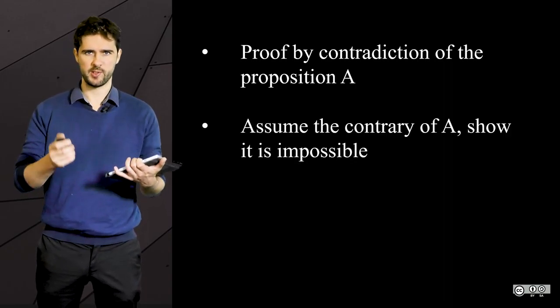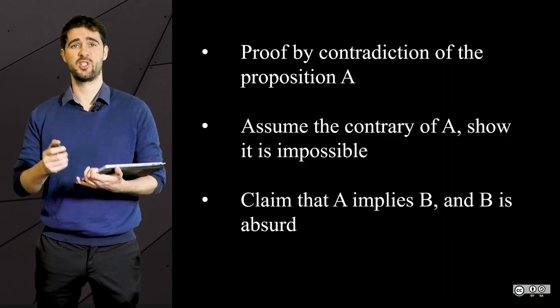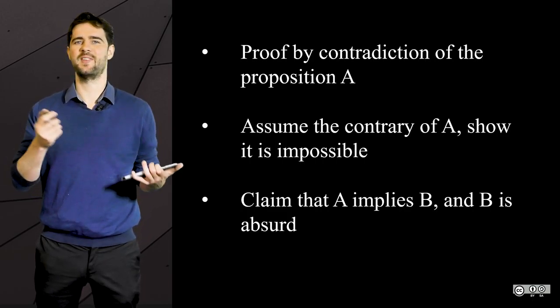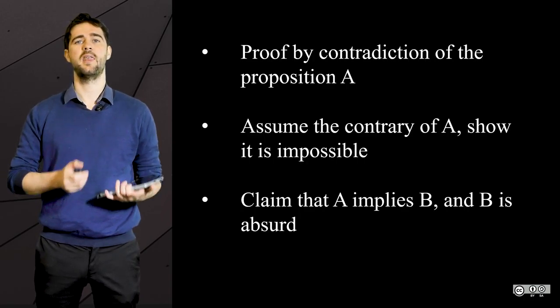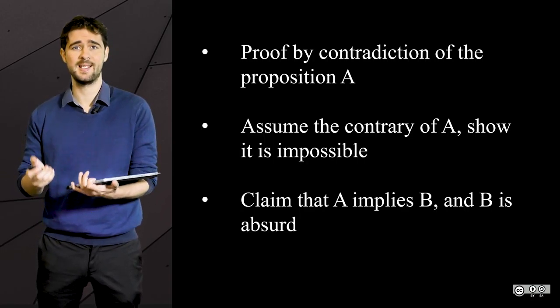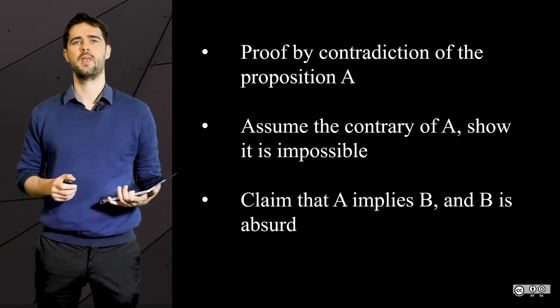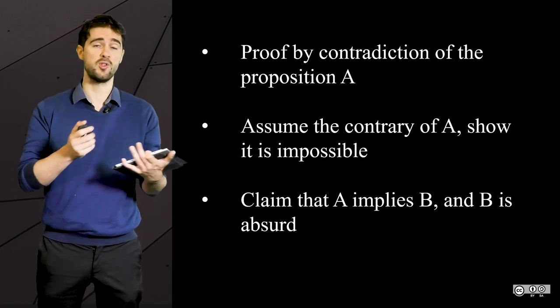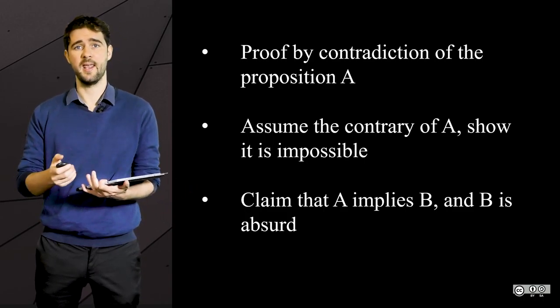Or you show that proposition A implies proposition B necessarily, notably if it is a suppressed or a hidden premise. And then you show that B is impossible or absurd. And since a true proposition cannot imply a false proposition, then A cannot be true.